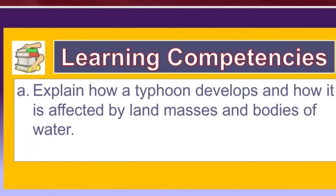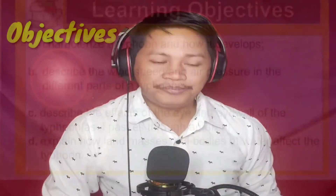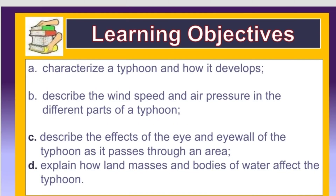The learning competency is to explain how a typhoon develops and how it is affected by land masses and bodies of water. Our learning objectives are: (a) characterize a typhoon and how it develops, (b) describe the wind speed and air pressure in the different parts of a typhoon, (c) describe the effects of the eye and eyewall as it passes through an area, and (d) explain how land masses and bodies of water affect the typhoon.